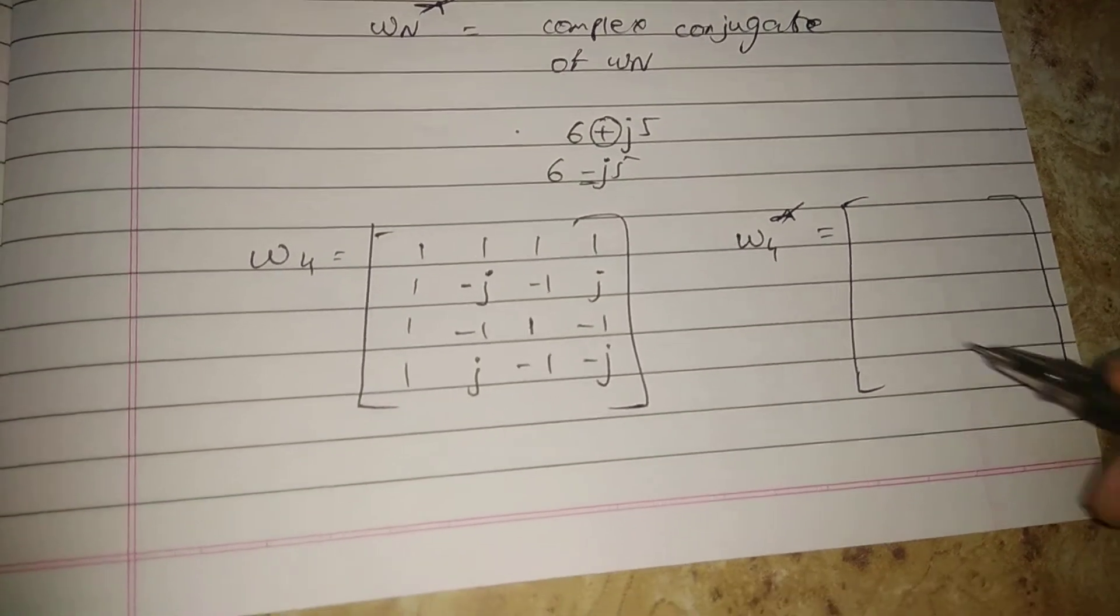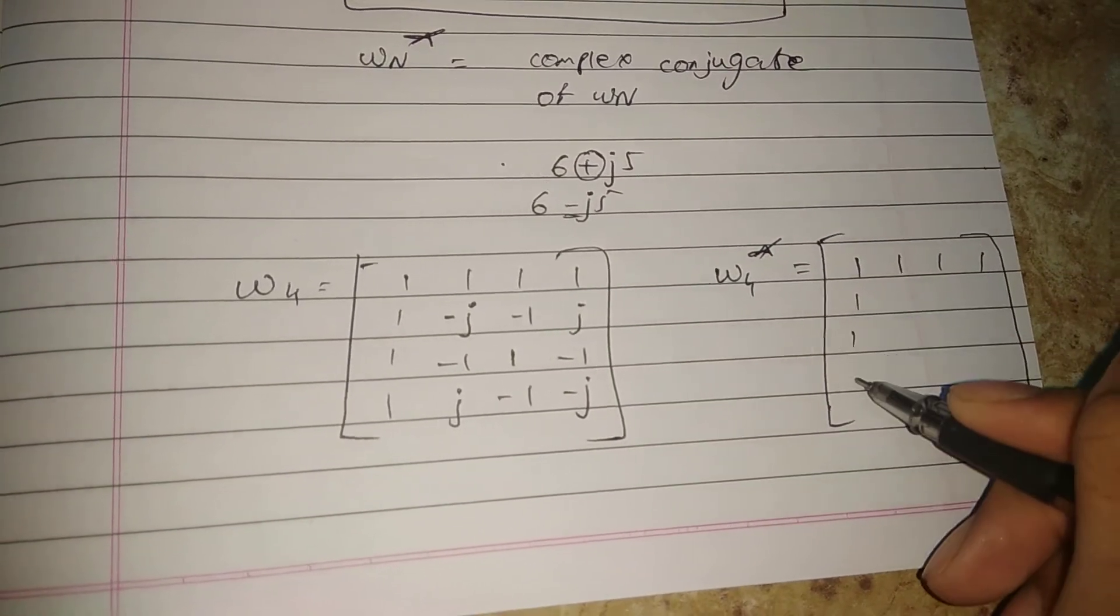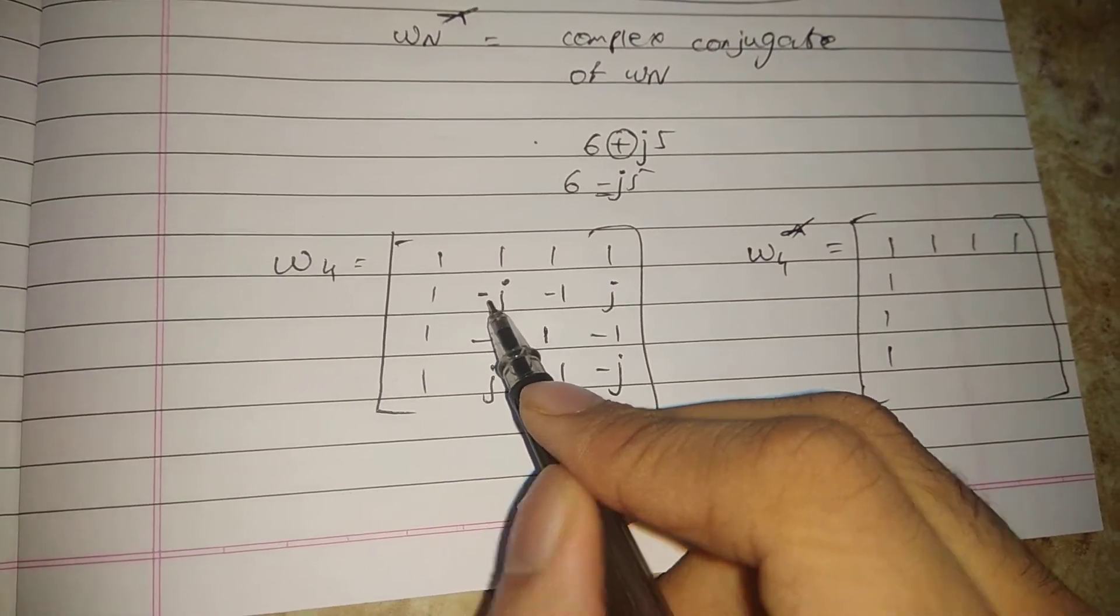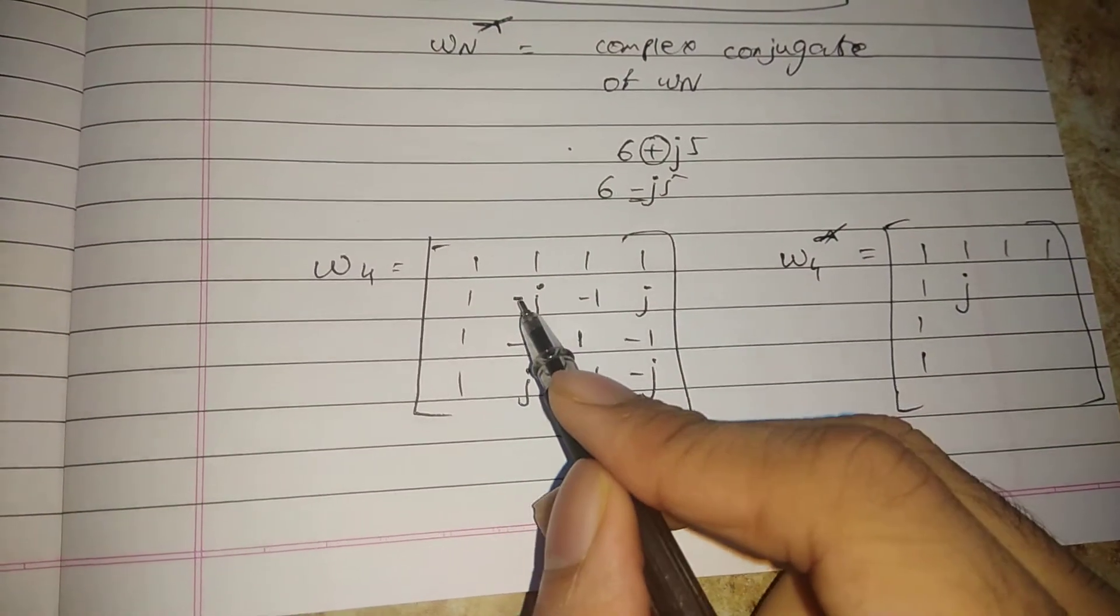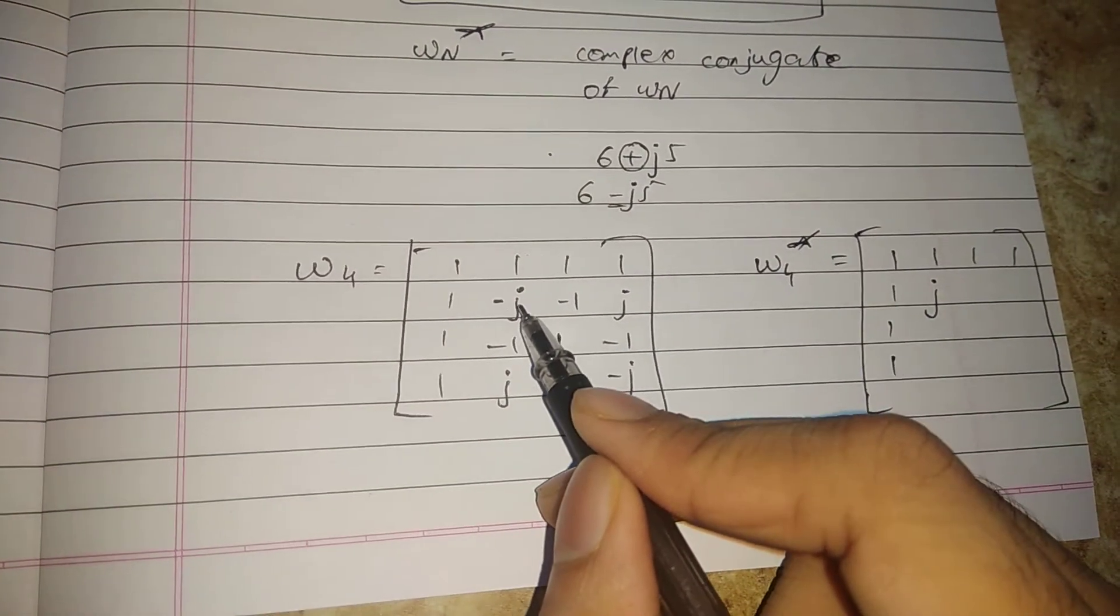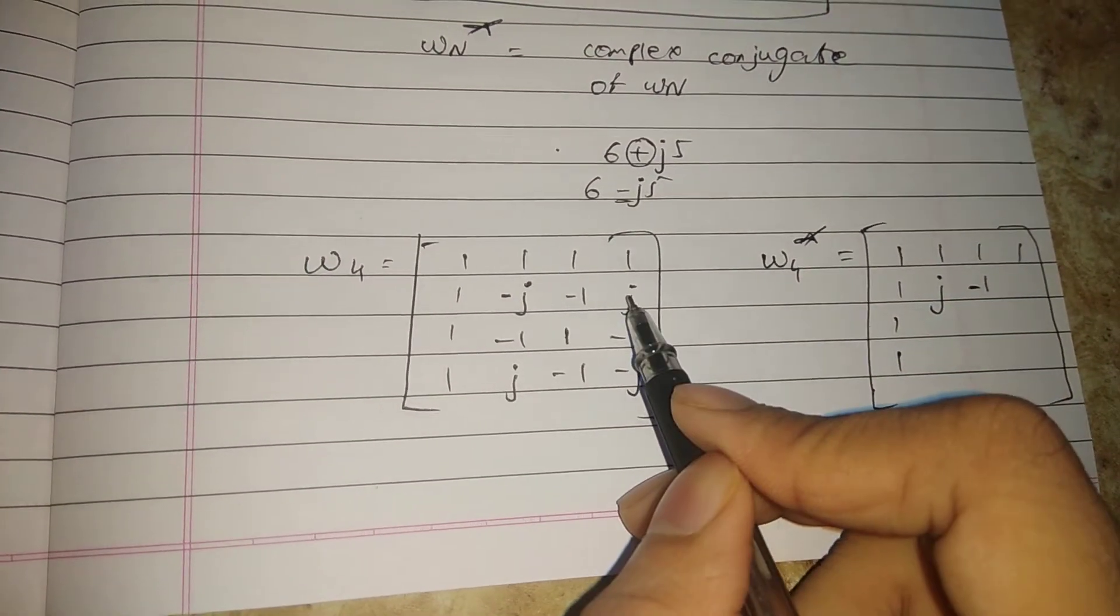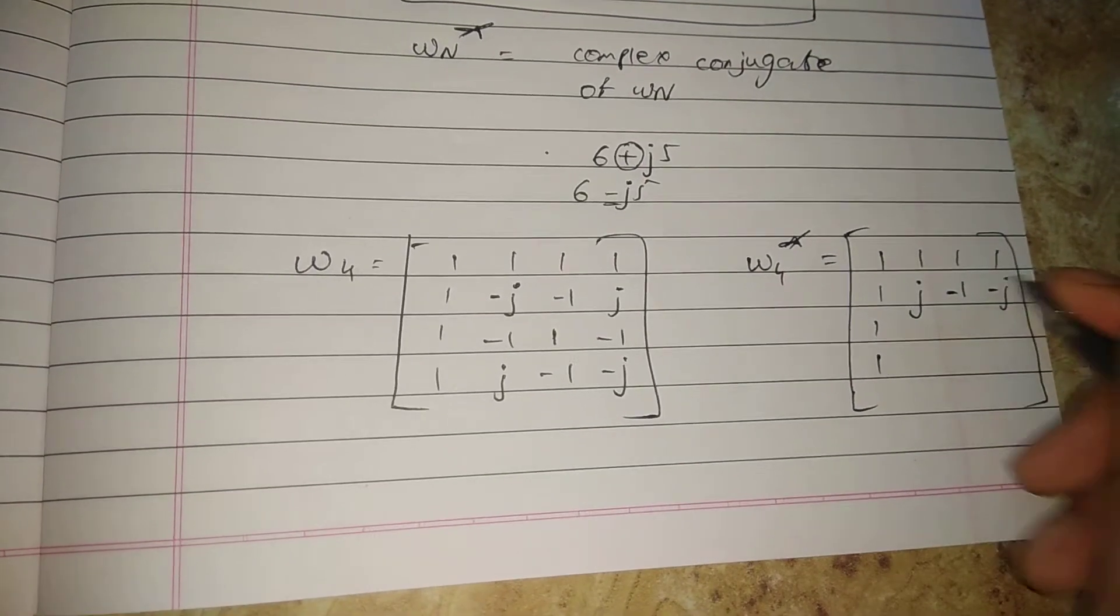Ones will not have any changes because they are real parts. In place of j, I'll write positive j. I'm changing the sign of the imaginary part only. Remember, minus on real parts doesn't change. So I write minus 1 here, and j becomes minus j with sign change.